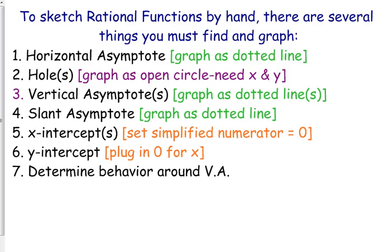X-intercepts — remember, I'm trying to build this from the very beginning. When we were doing polynomials and talked about their x-intercepts, we found the zeros of the function; that's where you're on the x-axis, where the function equals zero. Well, our functions are fractions, so the only way for a fraction to equal zero is if the numerator equals zero. That's why we set the simplified numerator equal to zero. It's very important to use the simplified numerator, because if anything is a hole, it can't be an x-intercept.